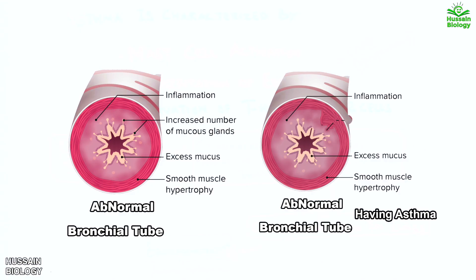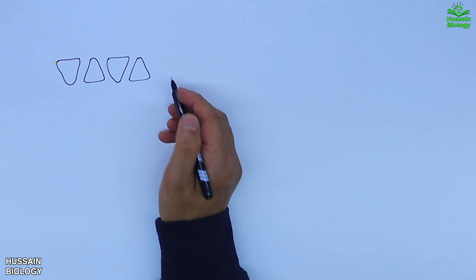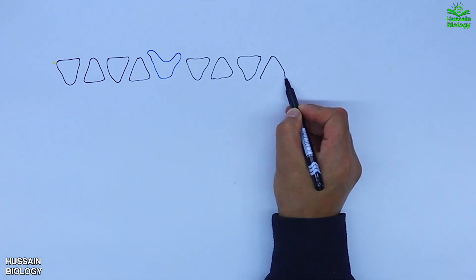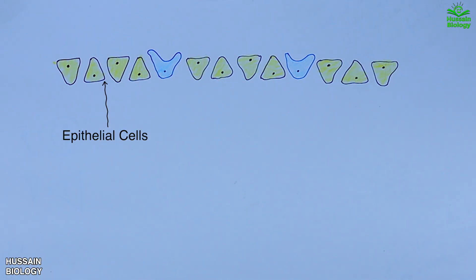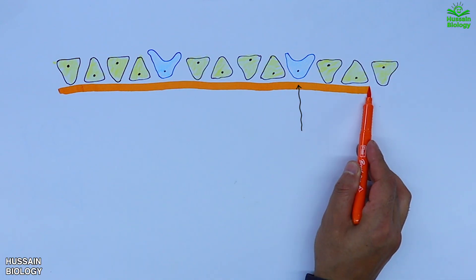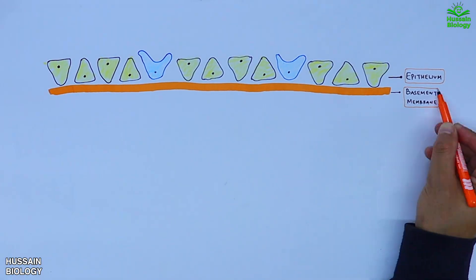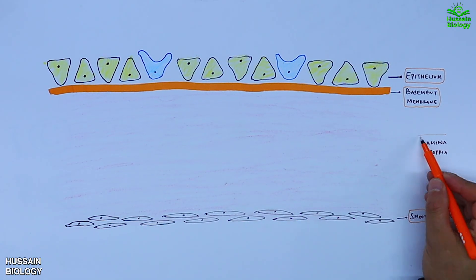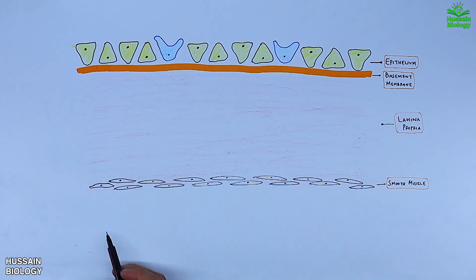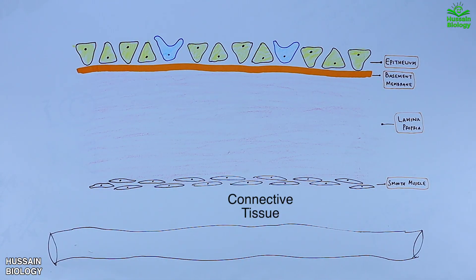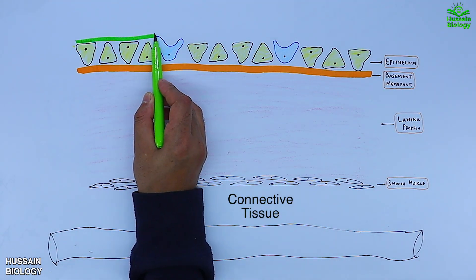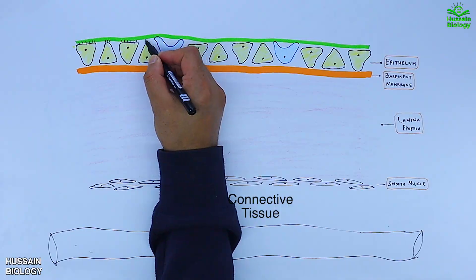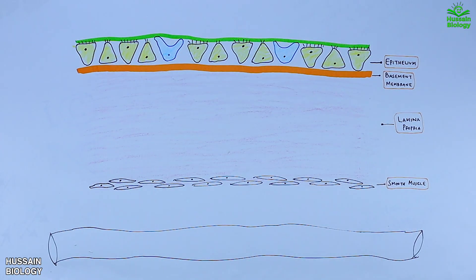Now let's see the mechanism in detail. In this diagram we have the epithelium membrane of a bronchiole, which has goblet cells shown in the diagram. Beneath it we have the basement membrane, then lamina propria, followed by smooth muscle and connective tissue, and then blood vessels. The epithelium has secretion of mucus on its surface as shown.